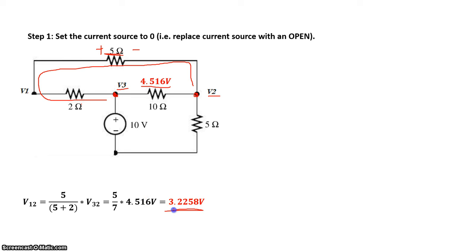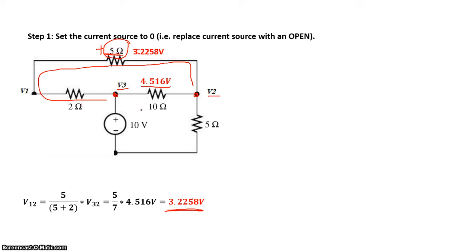This voltage of 3.2258 volts is the total contribution of the 10 volt source on the voltage across the 5 ohm resistor. We've figured out what happens to the voltage across the 5 ohm resistor when the current source is not present. Now let's remove the voltage source and find the contribution of the current source.